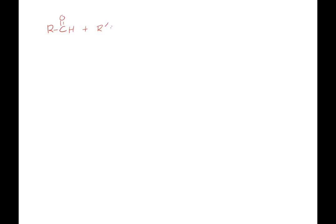Last time we talked about taking an aldehyde and a ketone and adding to it an alcohol using acid as a catalyst, and that left us with adding the OR and turning the carbonyl into an OH. So this was a hemi — in this specific case, this is a hemi acetal.